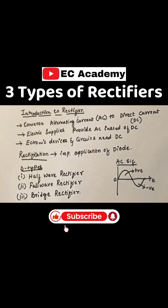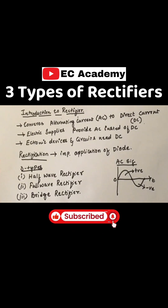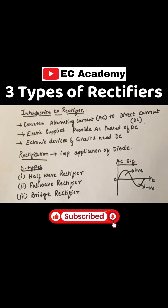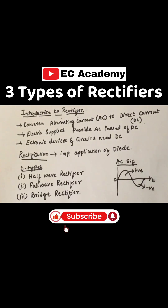The bridge rectifier is also a full wave rectifier. The only difference is the diodes are arranged in the form of a bridge, that's why the name bridge rectifier.